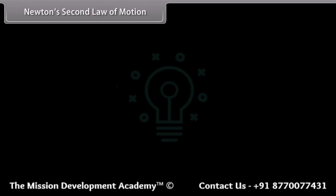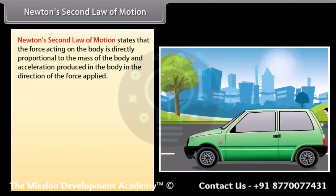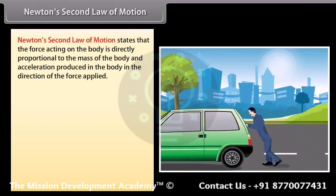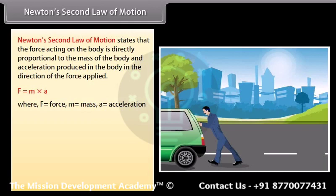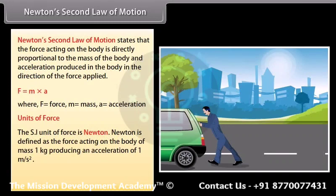Newton's second law of motion states that the force acting on the body is directly proportional to the mass of the body and the acceleration produced in the body in the direction of the force applied. F equals m times a, where F is force, m is mass, and a is acceleration. The SI unit of force is the Newton, defined as the force acting on a body of mass 1 kg producing an acceleration of 1 meter per second squared. The unit is kilogram meter per second squared, or Newton.